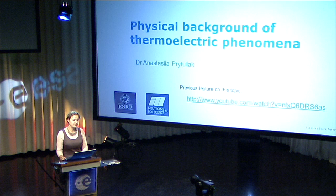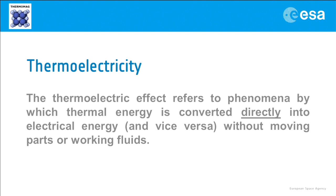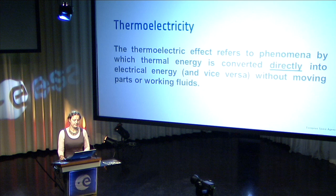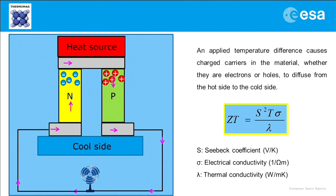As we already know, temperature difference creates an electric potential in a junction of two different semiconductors. Now let's try to understand in more detail why this occurs. When we apply heat, the charge carriers, whether they are electrons or holes, are migrating from the hot side to the cold side, leaving oppositely charged nuclei. The direction of the current flow in an electric circuit is opposite to the direction of flow of electrons.